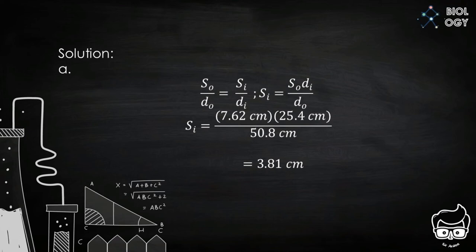For letter A, we can solve that using the equation S sub O over D sub O equals S sub I over D sub I. Manipulating that equation, we have S sub I equals S sub O multiplied by D sub I over D sub O, which gives us S sub I equals 7.62 cm multiplied by 25.4 cm over 50.8 cm, giving us the final answer 3.81 cm.